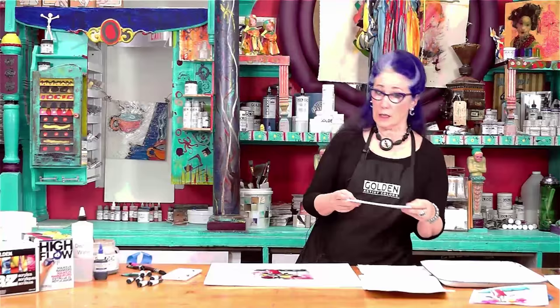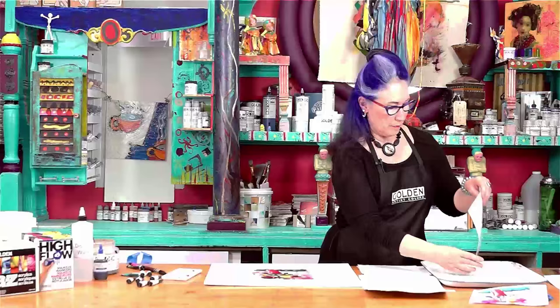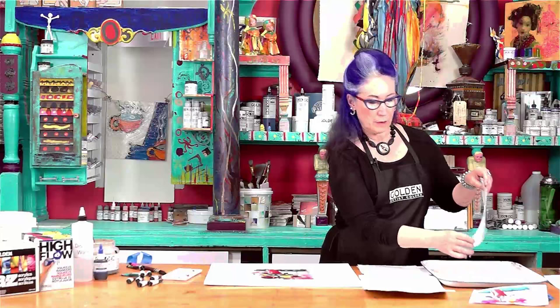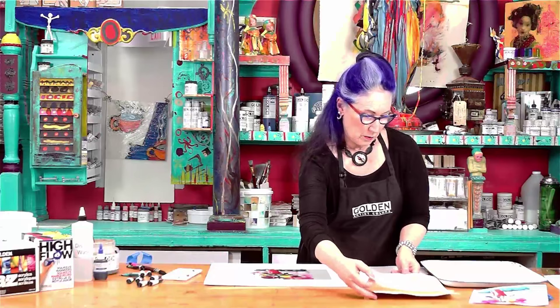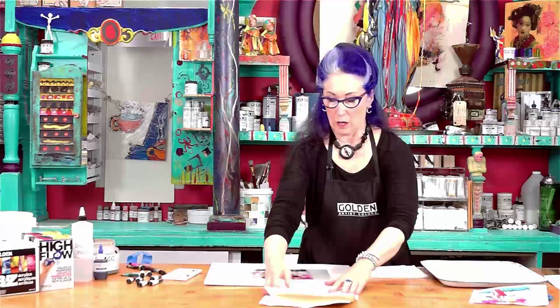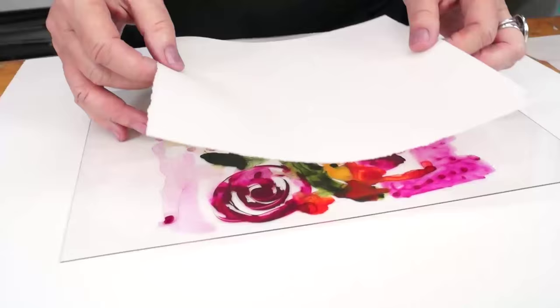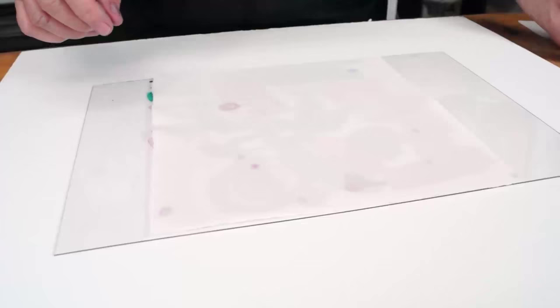Now that the plate is dry we can print it. I'm going to use the Arches 88 and I'm just going to dampen it. It just takes a minute because this is so absorbent. I need to blot it with the blotter, just lay it on one blotter, put the other one on top. Get all that shininess off of the paper. You can see this is nice and matte and all we have to do is center it right on top of that dry watercolor.